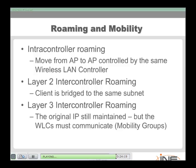In layer three inter-controller roaming, the wireless LAN controllers need to be in close communication with each other. You can configure mobility groups to make this work. Remarkably, the roaming user keeps their same IP address — even though they moved from AP to AP, from WLC to WLC, and from one subnet to another, they maintain their original IP address.